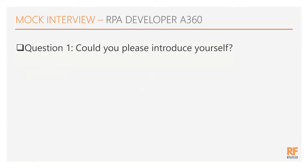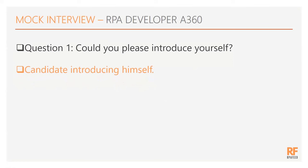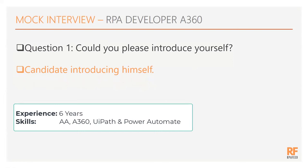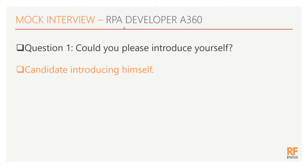Hi Nandu, can you please introduce yourself? Sure, thank you. My name is Nandu and I have over six years of experience in the IT industry, with relevant experience in the RPA sector. My primary skill set is Automation Anywhere, and I also have some hands-on experience with UiPath and Power Automate. I've been working with Automation Anywhere from version 9 all the way through to A360.